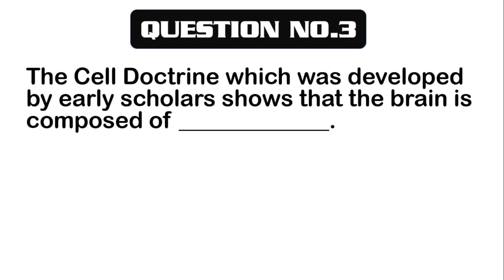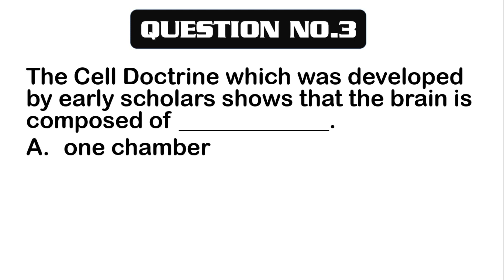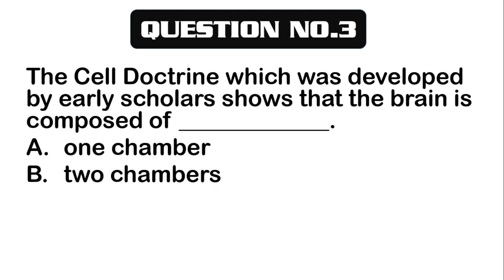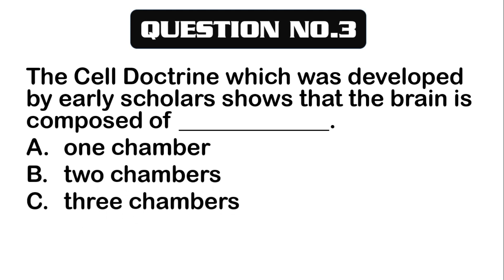Question number 3. The cell doctrine, which was developed by early scholars, shows that the brain is composed of: A. one chamber, B. two chambers, C. three chambers, D. four chambers.